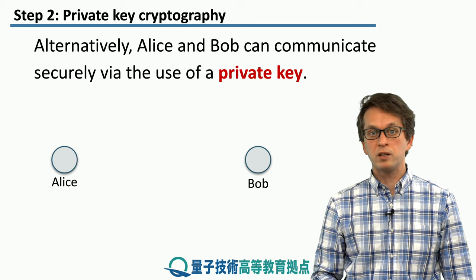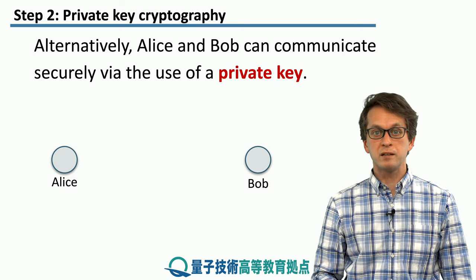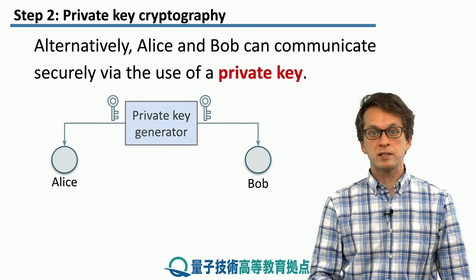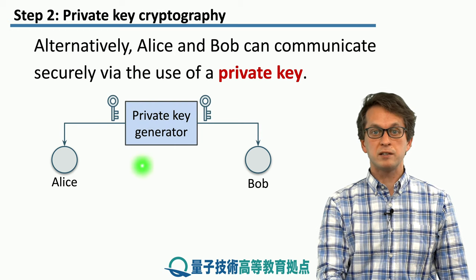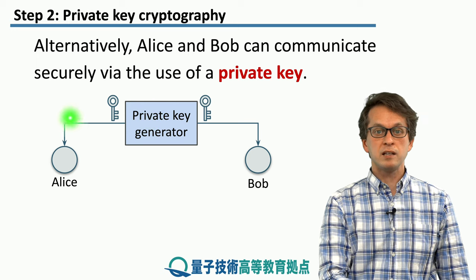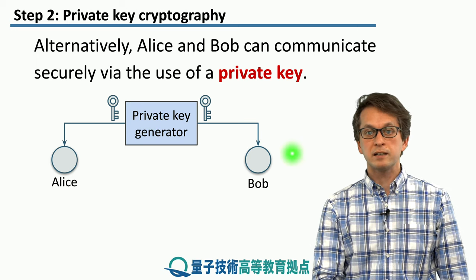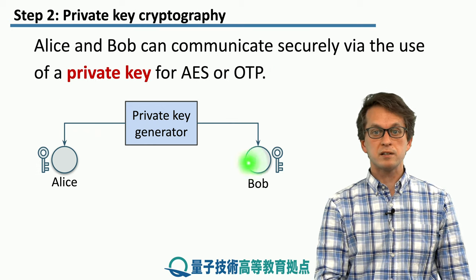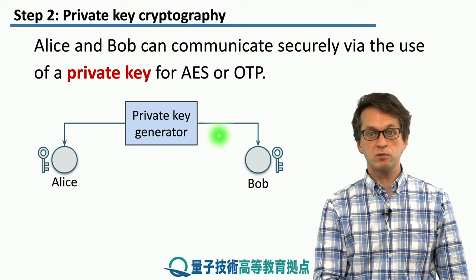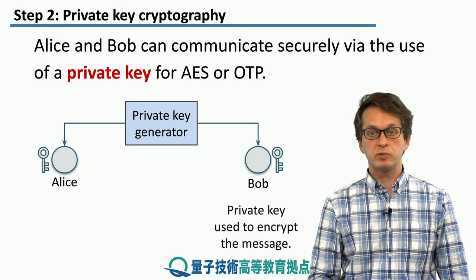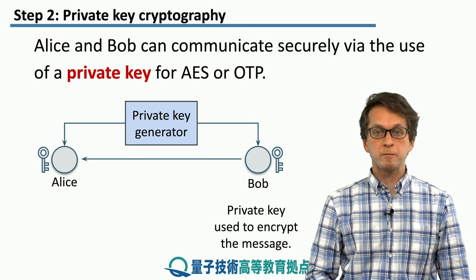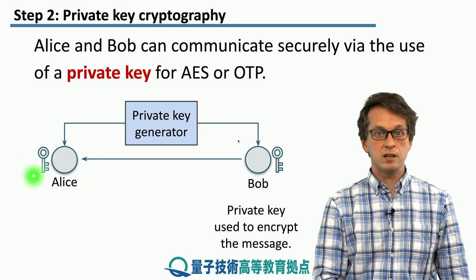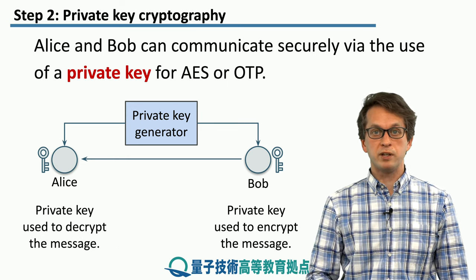So how can we actually establish a secure connection between Alice and Bob? The alternative method is to use a private key. Here, there is some hypothetical generator device that can generate a private key, and that key is then sent to both Alice and Bob. Now Alice and Bob share a correlated secret key that only they know, and they can use it to encrypt their messages. For example, Bob encrypts his message, sends it to Alice, and Alice uses her part of the secret key to decrypt and read the message.